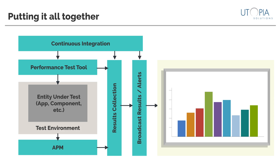You might be thinking that this seems like a lot of work and don't see how you can carve off time with everything else in the backlog. And you're right — this isn't a trivial amount of work. However, you don't need to build it overnight. A good place to start is with executing a few simple component tests automatically as part of your build environment, then getting an APM solution running in the environment if there isn't one already, and then finally results collection and broadcasting the results to those that need to see them.